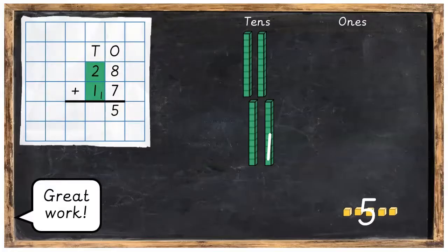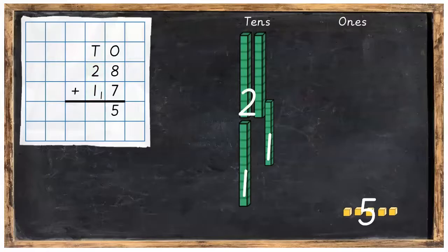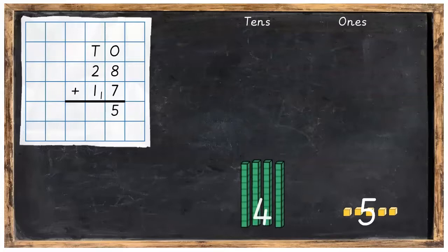Great work! We're now going to add the tens together. So we've got our 2 tens plus 1 ten plus the 1 ten we brought over, which is altogether going to equal 4 tens.